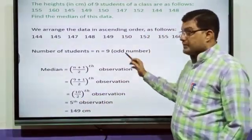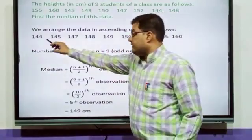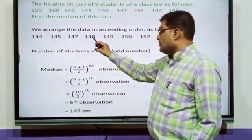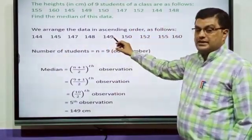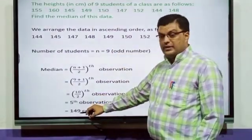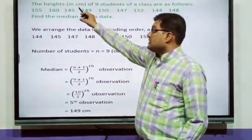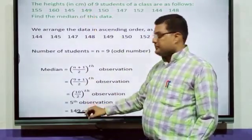Now, which is the 5th observation? From the ascending order we have to see. 1st, 2nd, 3rd, 4th, 5th. The 5th observation is 149. So, your median is 149 cm. As the question was given in centimeter, so the unit is centimeter.